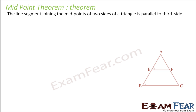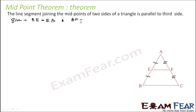Now since this is a theorem, let's try to prove it. The theorem states: the line segment joining the midpoints of two sides of a triangle is parallel to the third side. Given: AE = EB and AF = FC. To prove: EF is parallel to BC.